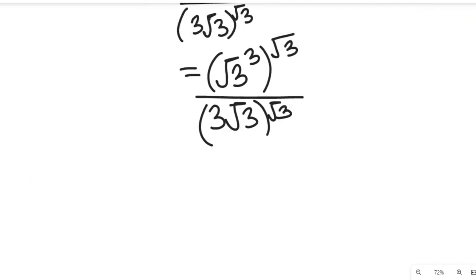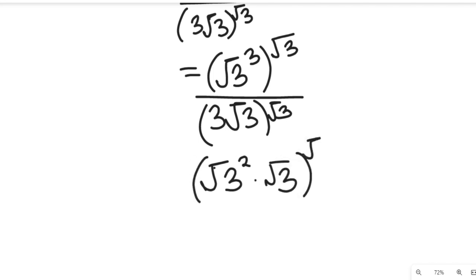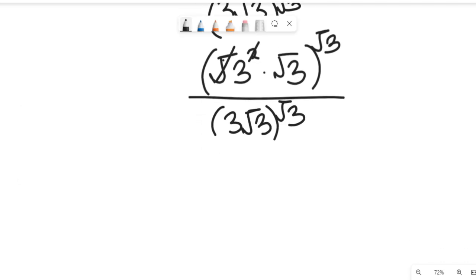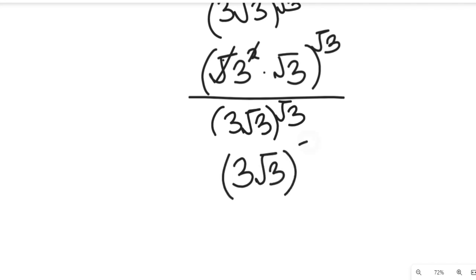This value will give us square root of 3 to the power of 3, because this times this gives us the power of 3. The square root of 3 to the power of 3 — the rules of surds permit that. So we'll have 3 to the power of 3 root 3, all to the power of square root of 3. This will cancel out, and above that we'll have the value become 3 root 3 all to the square root of 3.